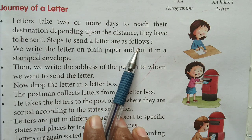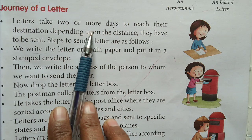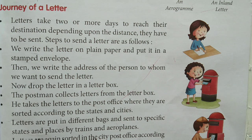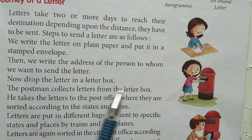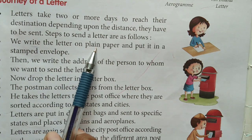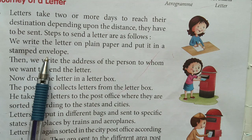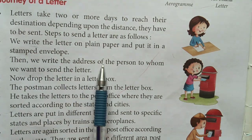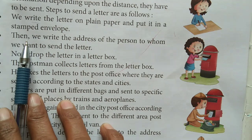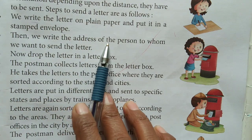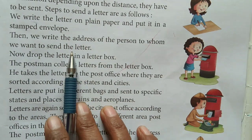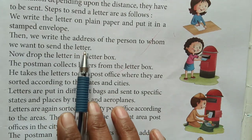Jo letters hain, woh two or more days lete hain. Yeh distance pe depend karta hai ki kitni door ko humne post kiya hai, kaunse address par. First, we write the letter on plain paper and put it in a stamped envelope. Hum letter likhte hain plain paper pe, phir humein stamped envelope mein usko daalna parta hai. Then we write the address of the person to whom we want to send the letter — jisko humein letter send karna hai.